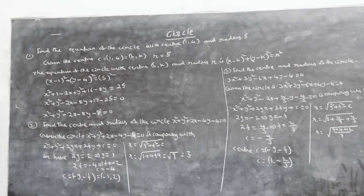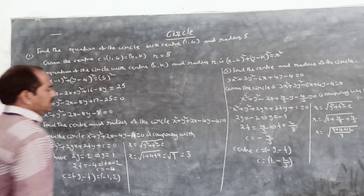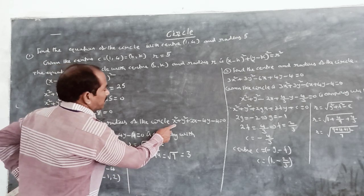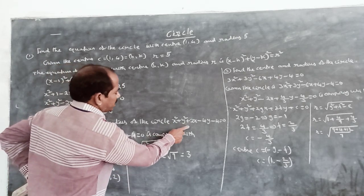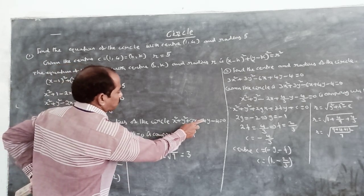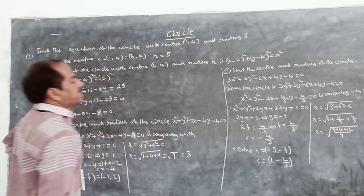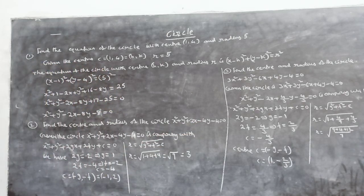Next problem: Find the center and the radius of the circle. x square plus y square plus 2x minus 4y minus 4 is equal to 0.